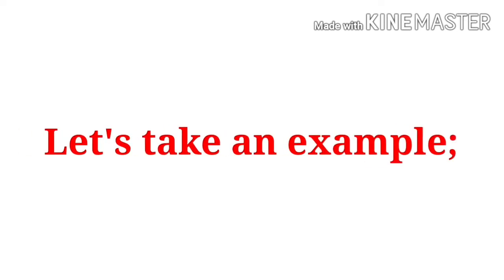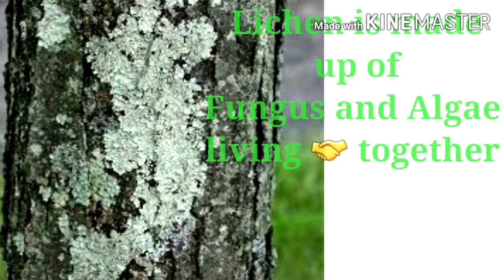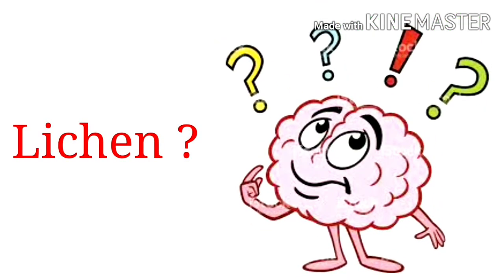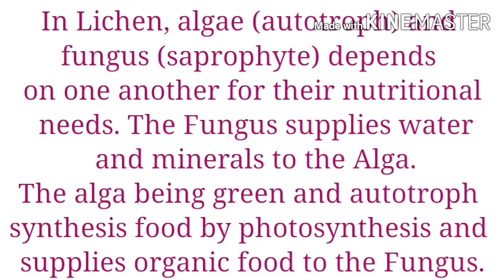Let's understand with the help of an example. The image shown here is lichen. Lichen is made up of fungus and alga living together. Alga is an autotroph and fungus is a saprotroph. They are dependent on each other for their nutritional needs. Fungus and alga mutually help each other.